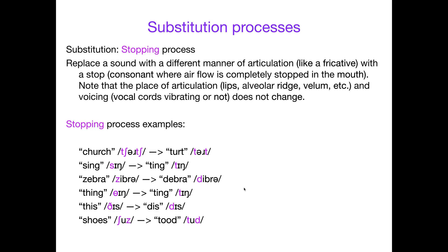You can also apply stopping to nasals. Sing ends with 'ng', which is technically a stop but air still comes out the nose. Using this same process — oral stopping — you can turn that nasal into the equivalent oral stop. 'Ng' is velar and voiced, so the voiced velar stop is 'ga'. So if you stop the 's' to make 'ta' and stop the 'ng' to make 'ga', sing becomes 'sig'.